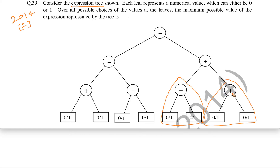Here again a plus operator is there, so we have to maximize both children. Starting from the simplest case — the rightmost leaf nodes — each can be at most 1, since the values are 0 or 1. So the maximum for this subtree is going to be 1 plus 1, which is 2.